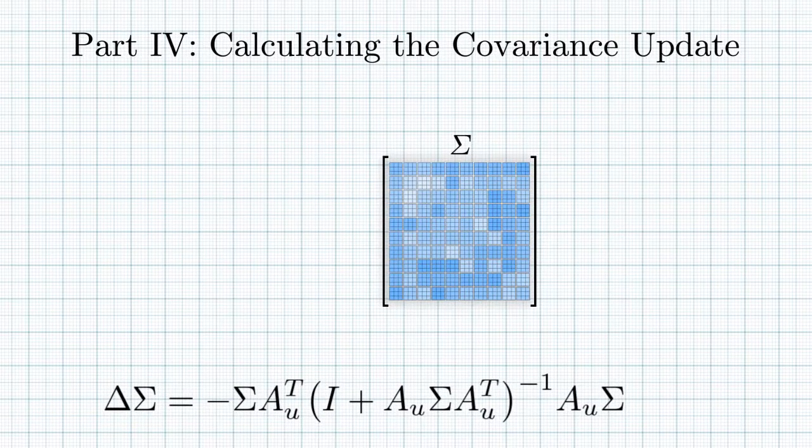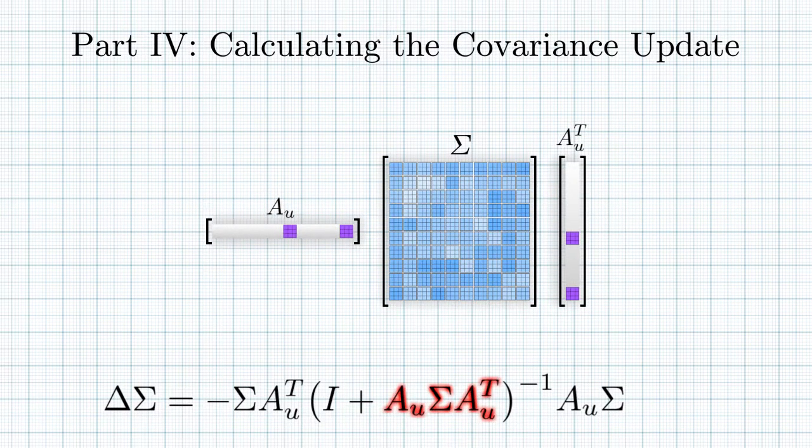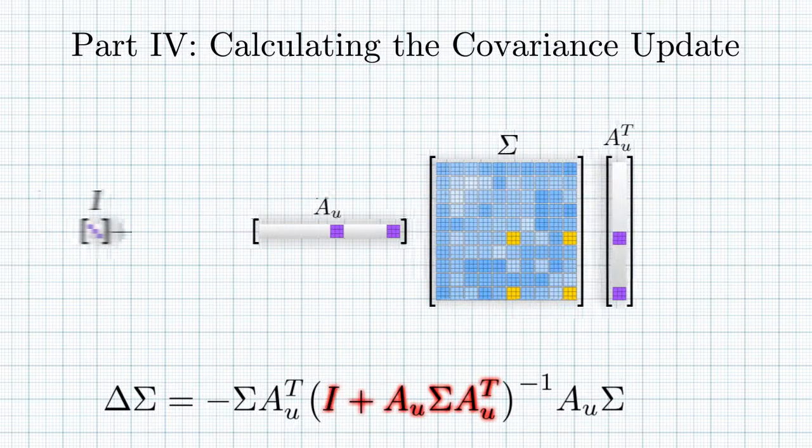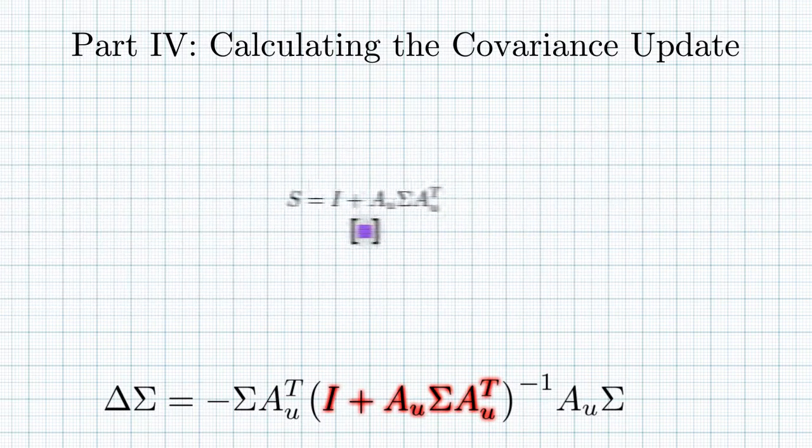To calculate incremental covariance updates, we can use the Woodbury formula. We begin with the covariance matrix from the previous step, and pre and post multiply it by the AU. Observe that only few elements of the full matrix are needed. In particular, the ones corresponding to the non-zero elements in AU. The result of this product is a very small dense matrix S, which is symmetric and invertible.